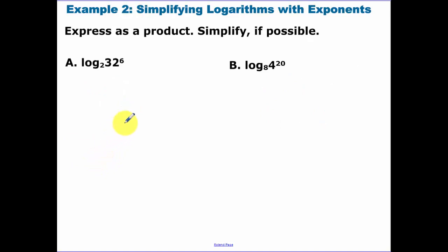Now express as a product, simplify if possible. So when looking at this problem, I wouldn't give you guys a calculator. And even me as a math teacher, I don't want to have to do 32 to the 6th power. That's going to be a crazy number. But if I bring down the 6 in front of the logarithm, because I have a power, I can make that now 6 times the log base 2 of 32. Now log base 2 of 32, 2 to what power gets me 32? That's the 5th power. So now I can simplify that to 30.